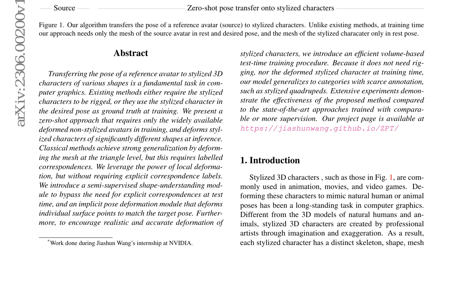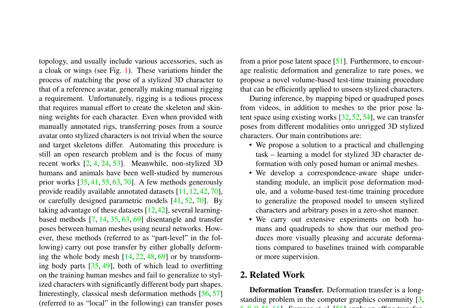The paper highlights the limitations of existing learning-based methods, which often rely on encoding global information and fail to generalize to stylized characters with large shape variations. Instead, this method focuses on local deformations, leveraging classical mesh deformation methods that transform individual triangles. This approach is demonstrated to be effective in extensive experiments on both humans and quadrupeds, producing more visually pleasing and accurate deformations compared to baselines trained with comparable or more supervision.